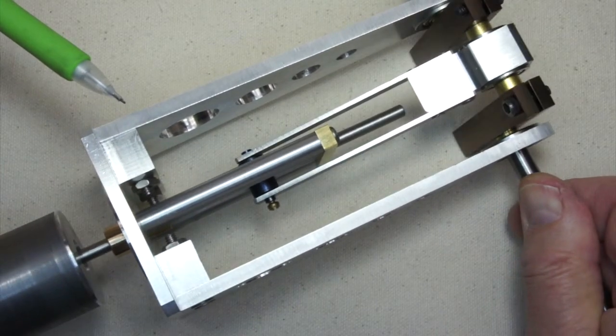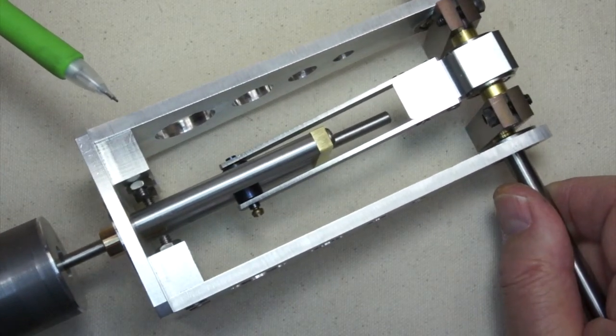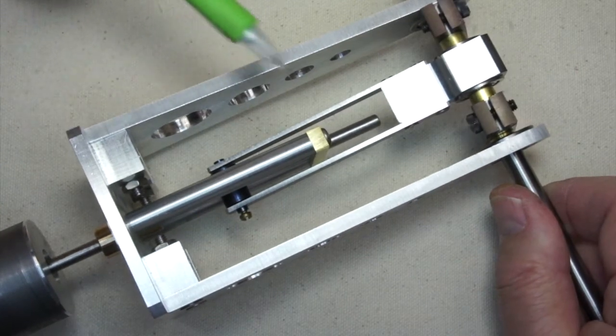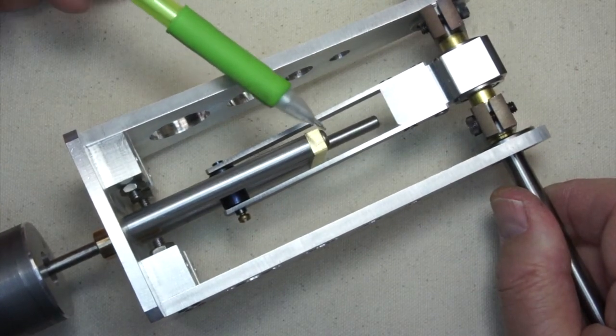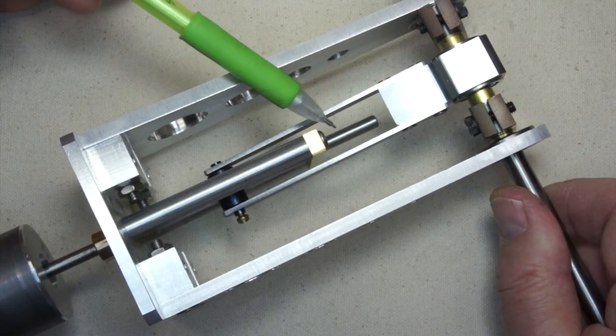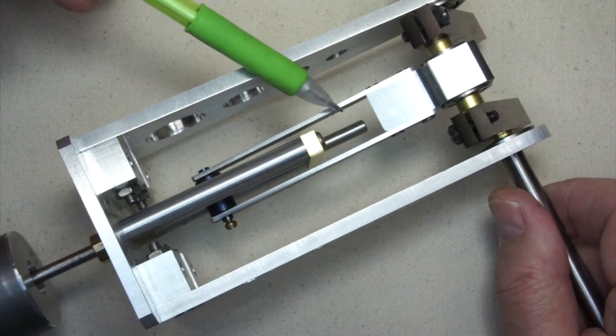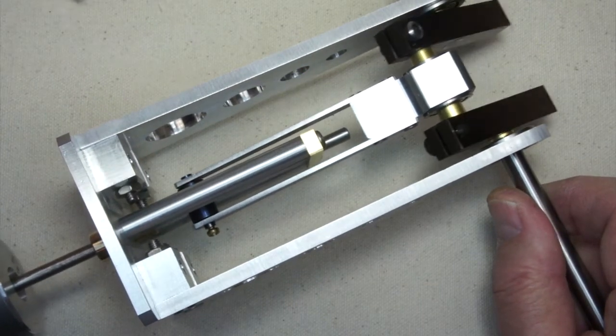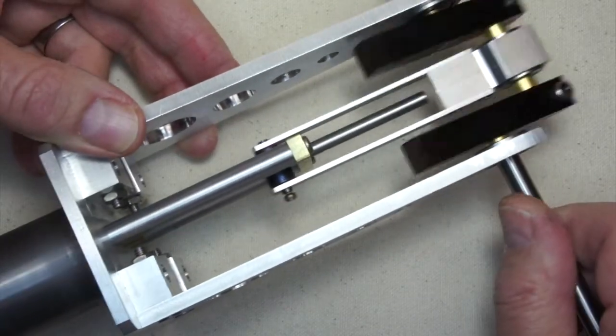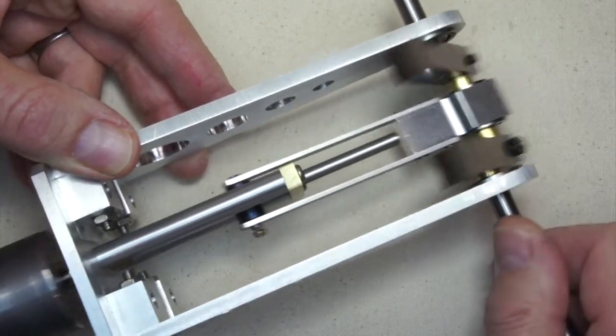This bearing system gives the displacer a lot of smooth running characteristics and in particular allows it to take up the side loading due to the angularity of the connecting rod as the engine goes through its cycle. It's a very smooth operating mechanism.